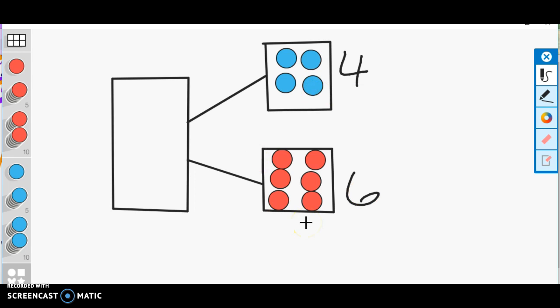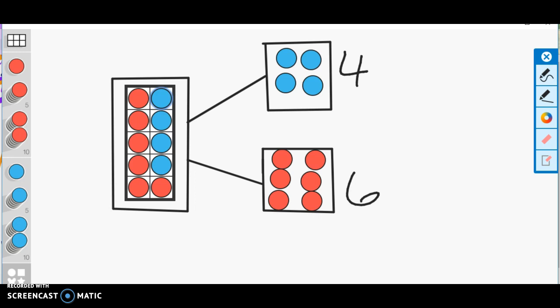But now it is represented in a part-part-whole with a number bond. And when you look at the whole, it looks like this: the part of the six, the part of the four come together to form the whole of a ten.